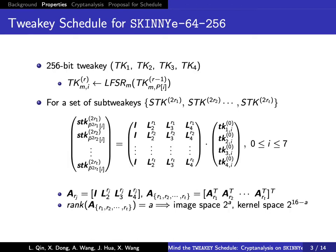We first give a formal analysis of relations of the sub-Tweakeys to clarify the properties of the new Tweakey Schedule. In the Tweakey Schedule of SkinnyE 64/256, the cells of the Tweakey are updated by a permutation P and different LFSRs. Since the Tweakey Schedule is linear, we can derive the sub-Tweakeys from the same cell of the master key as a system of linear equations.